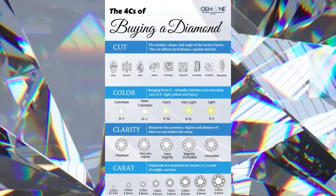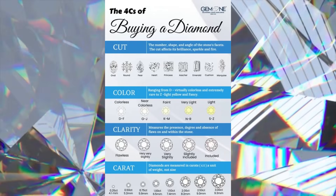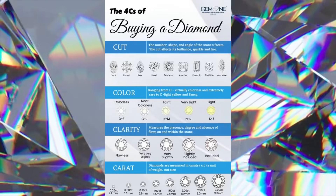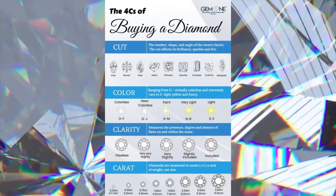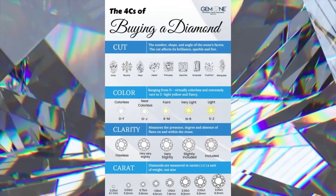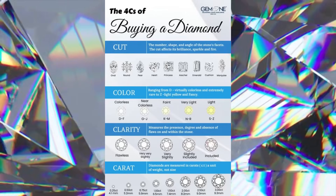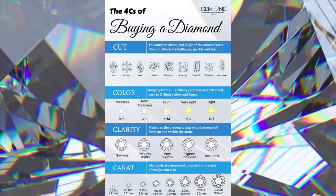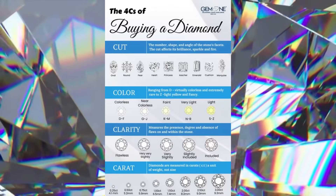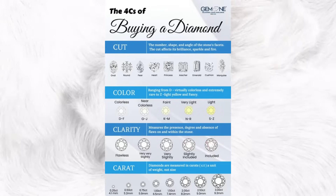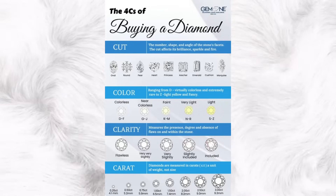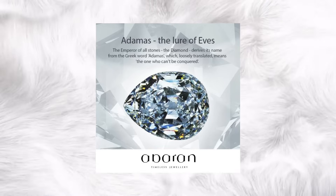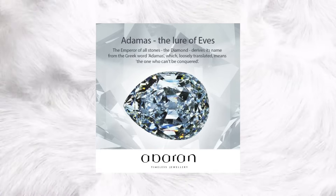Diamonds are typically graded on a 4C scale: cut, color, clarity, and carat weight. Carat weight is the most critical factor in determining a diamond's value. Diamonds are the hardest known material on earth; however, they are also one of the most thermally conductive materials, meaning they can dissipate heat very quickly. Natural diamonds are usually between 800 million and 3 billion years old.